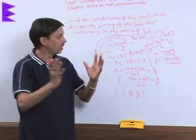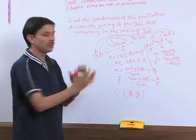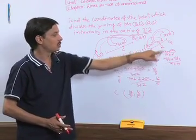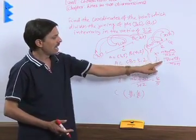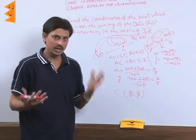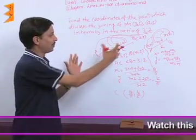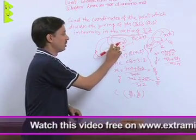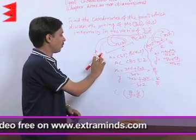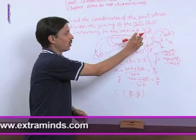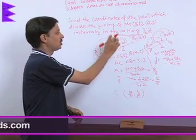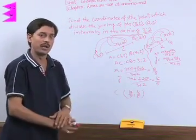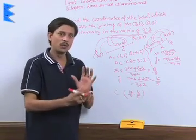So, this is the simplest way to use the section formula and always remember it is MX₂ + NX₁ upon M + N, MY₂ + NY₁ upon M + N. With the help of this, after comparing this is (X₁, Y₁), this is (X₂, Y₂), this is M, this is N. X₁ is 3, Y₁ is 5, X₂ is 4, Y₂ is 2, M is 3, N is 2. After putting all these values we have obtained the values of X and Y.